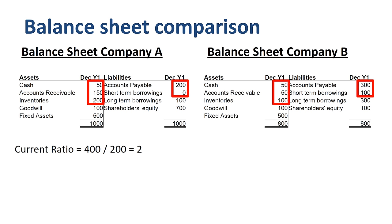For company B, 200 divided by 400 is 0.5. For every dollar of current liabilities, there is only 50 cents of current assets — a more risky position for a supplier that is hoping to get paid.